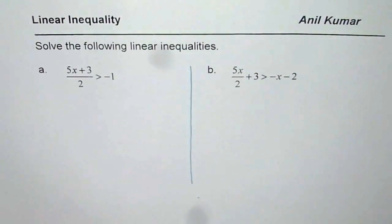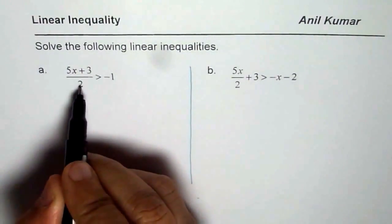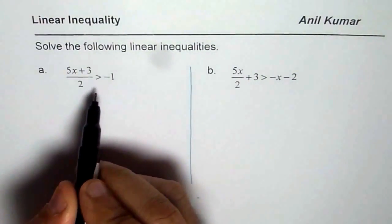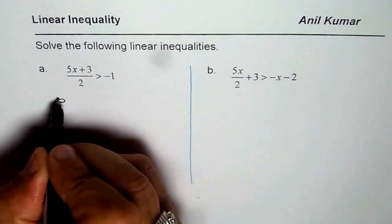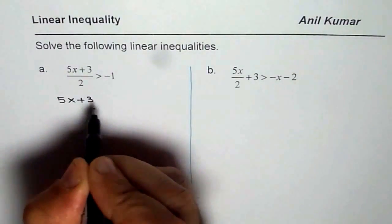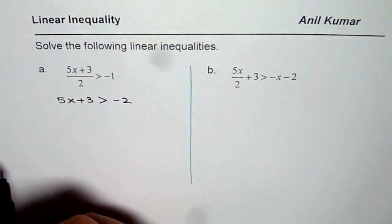The first one here is (5x + 3)/2 greater than minus 1. We can multiply both sides by 2. If we do that, then we get rid of the fraction. So we can write this as 5x plus 3 greater than minus 2. So this is multiplying both sides by 2.